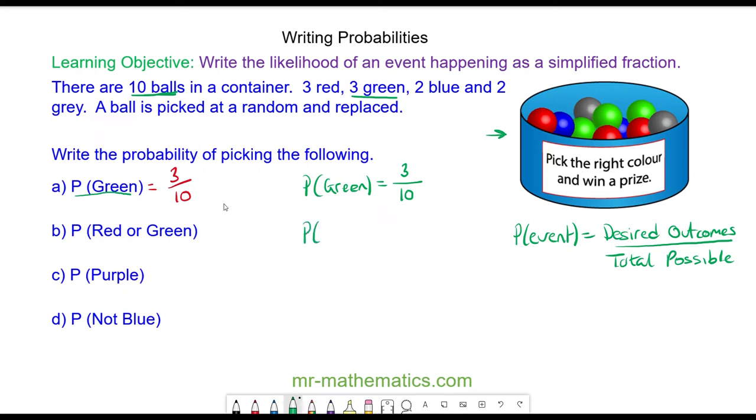The probability of red or green. We'll look at the probability of red, which is 3 out of 10. And in probability, the word 'or' means add. So we've got 3 out of 10 for red and we know there are 3 out of 10 for green. So in total we have 6 out of 10.